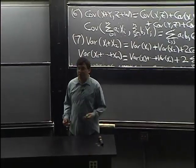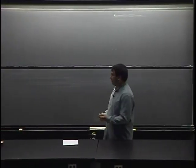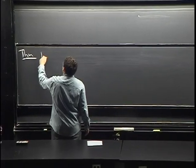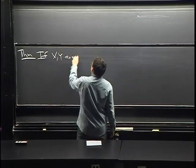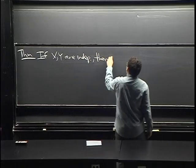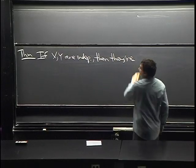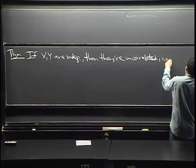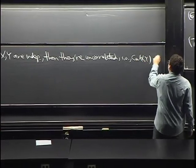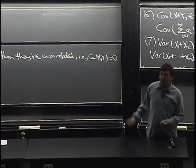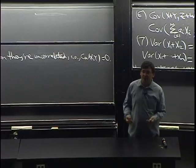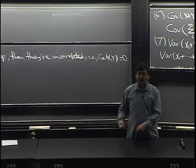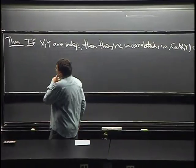Let's make sure the connection with independence is clear, and we also need to define correlation. The theorem says: if X and Y are independent, then they are uncorrelated, meaning Cov(X, Y) = 0. We actually proved this last time when studying joint distributions, using the two-dimensional LOTUS: E[XY] = E[X]·E[Y] in the independent case.